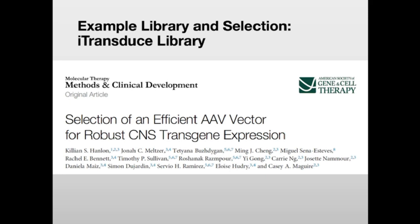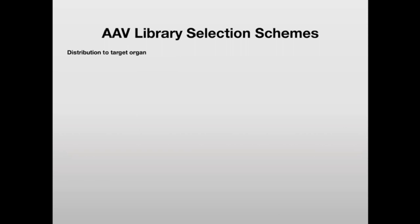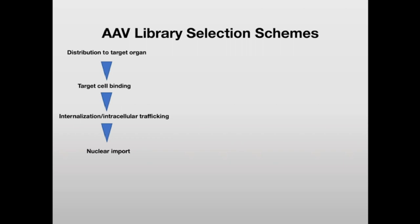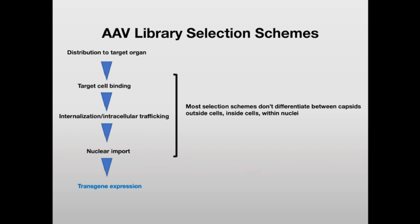Now I'll give an example of an actual library selection with a recent publication from our lab — the iTransduce library. The steps to successful vector transduction include: distribution to the target organ after injection, target cell binding, internalization and intracellular trafficking, nuclear import of the capsid, and finally transgene expression. Most selection schemes don't differentiate between capsids outside cells, inside cells, or within nuclei. We thought selecting for the most downstream step — transgene expression — would be optimal for condensing a library and finding candidates with the best chance of mediating the desired phenotype.